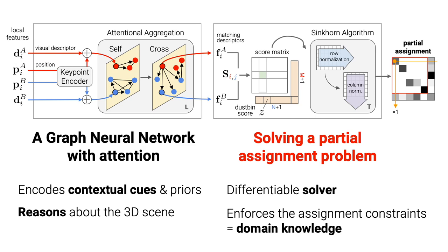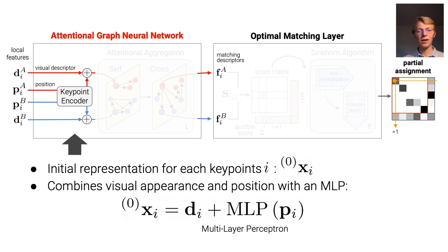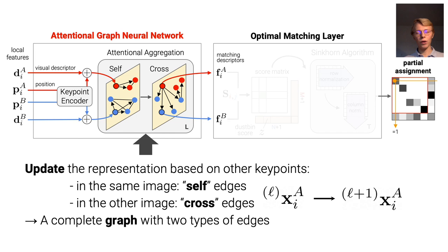Let's look at the architecture in more detail. We first combine the local visual appearance and the position into an initial representation using a multi-layer perceptron. For each keypoint, this representation is iteratively updated using information from other keypoints, either in the same image or in the other image. We can see the two sets of keypoints as nodes of a complete graph with two types of edges: self-edges and cross-edges.